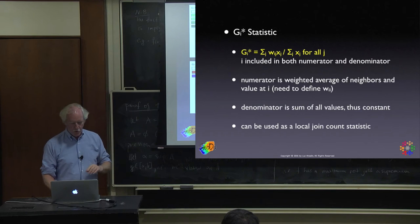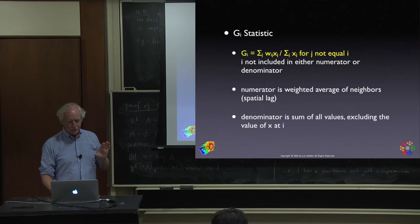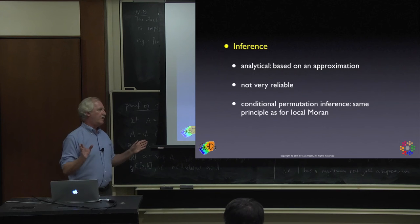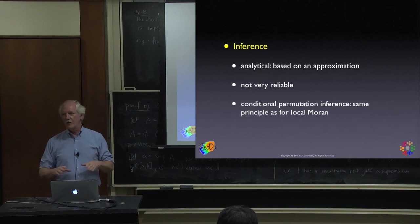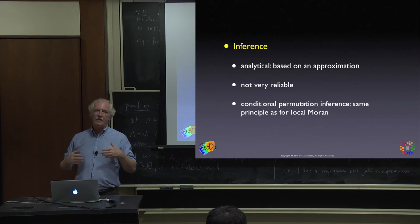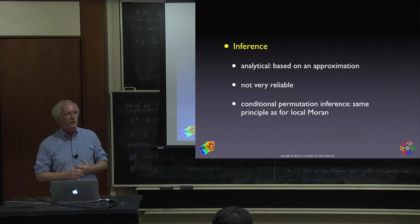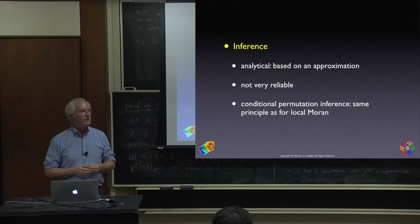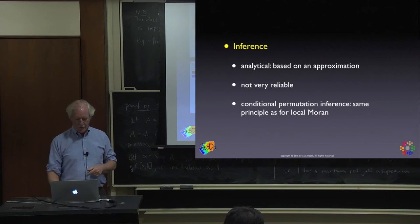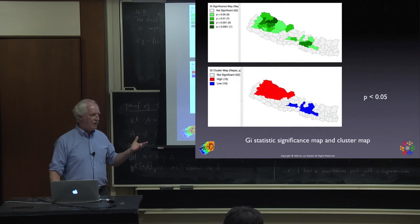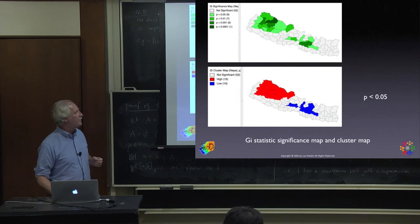In G_i*, we have to decide how to weight the value at location i relative to the neighbors — a practical consideration unlike anything in row-standardization. Inference is the same as for local Moran: analytical approximation is complicated and unreliable, so we use conditional permutation. The resulting maps are similar — the significance map shows what's significant, but doesn't tell you the cluster type.